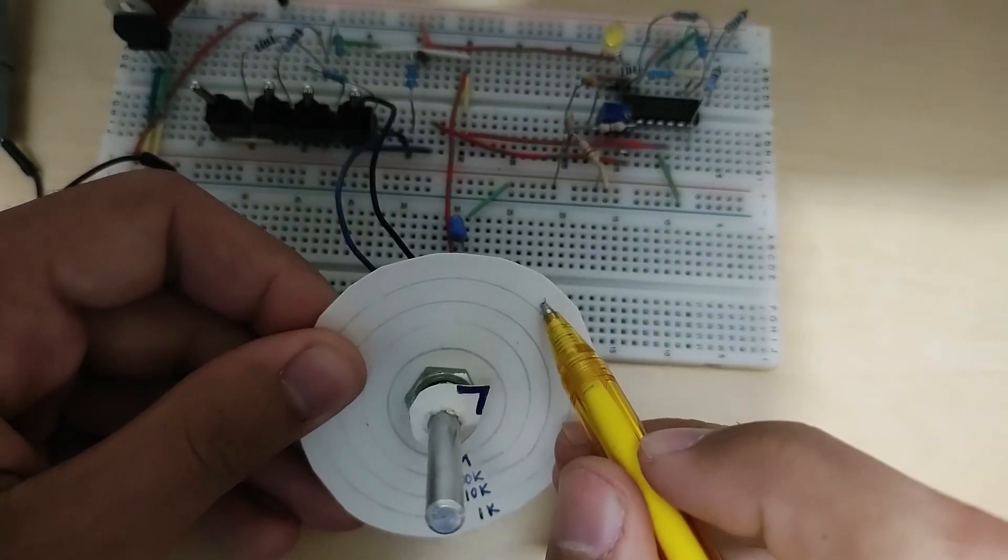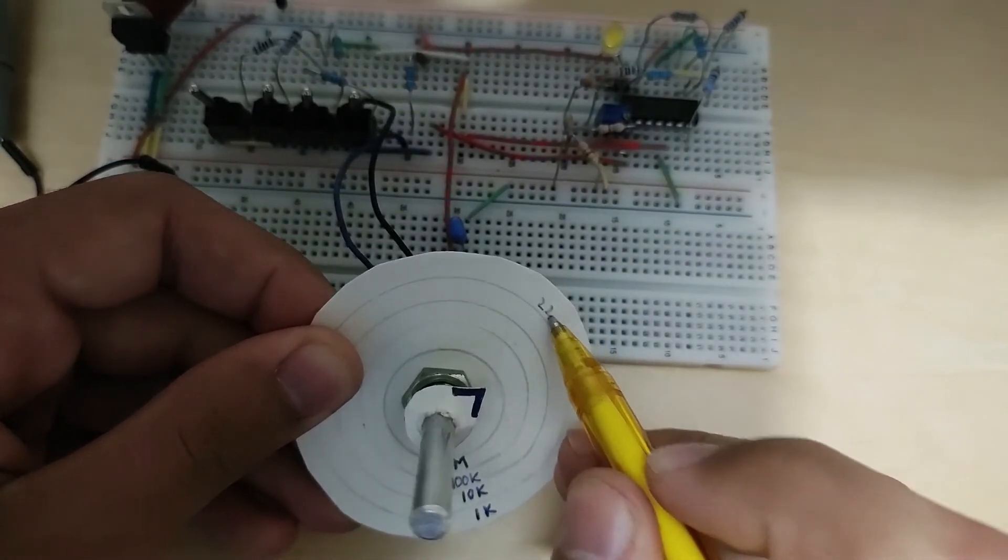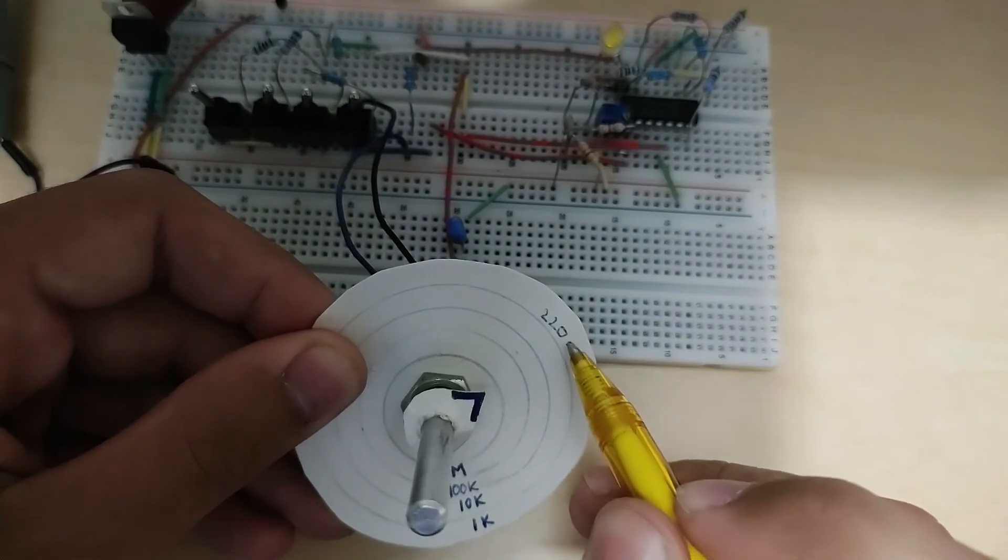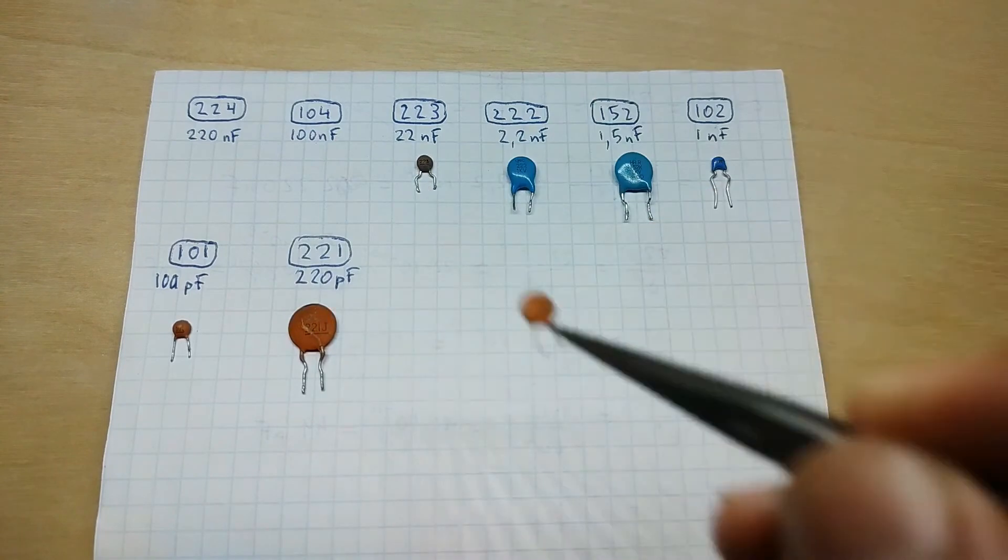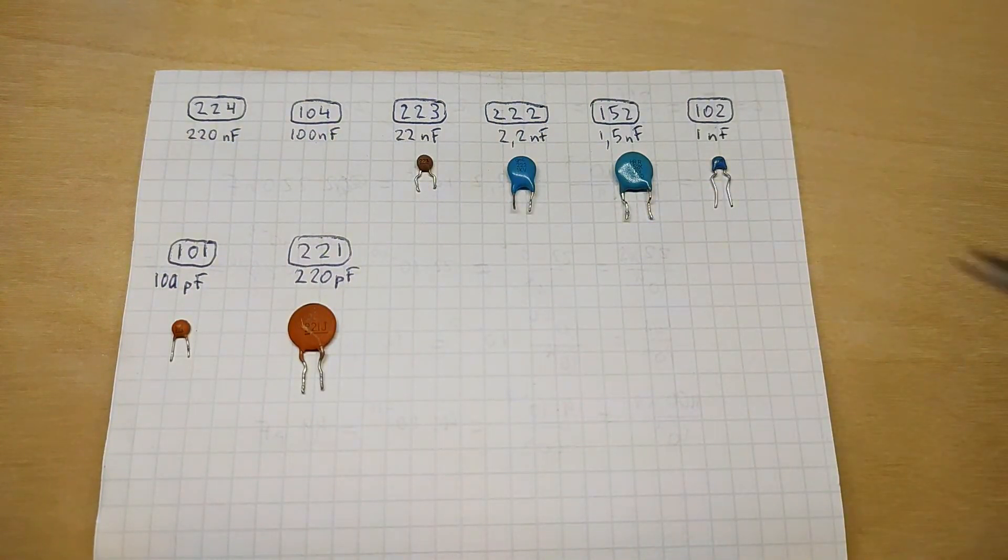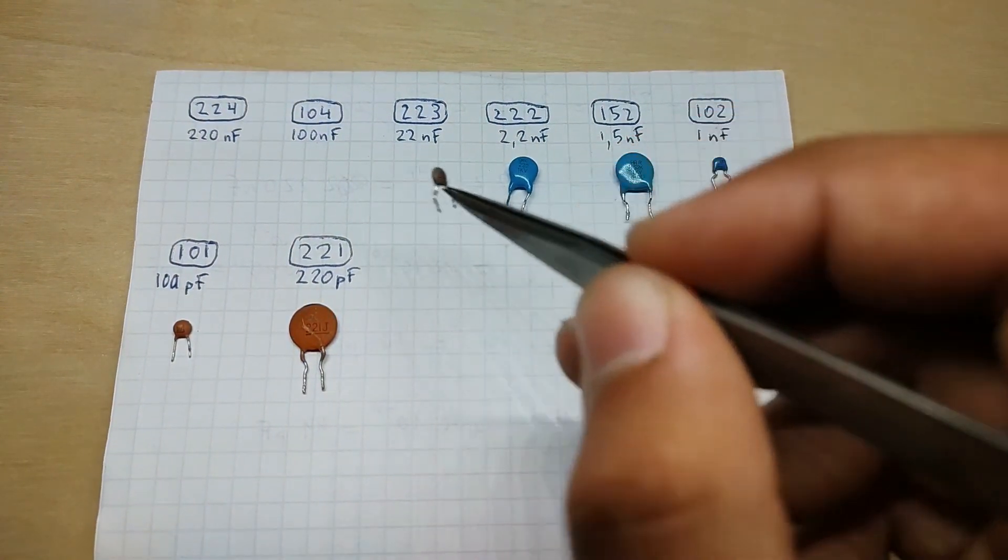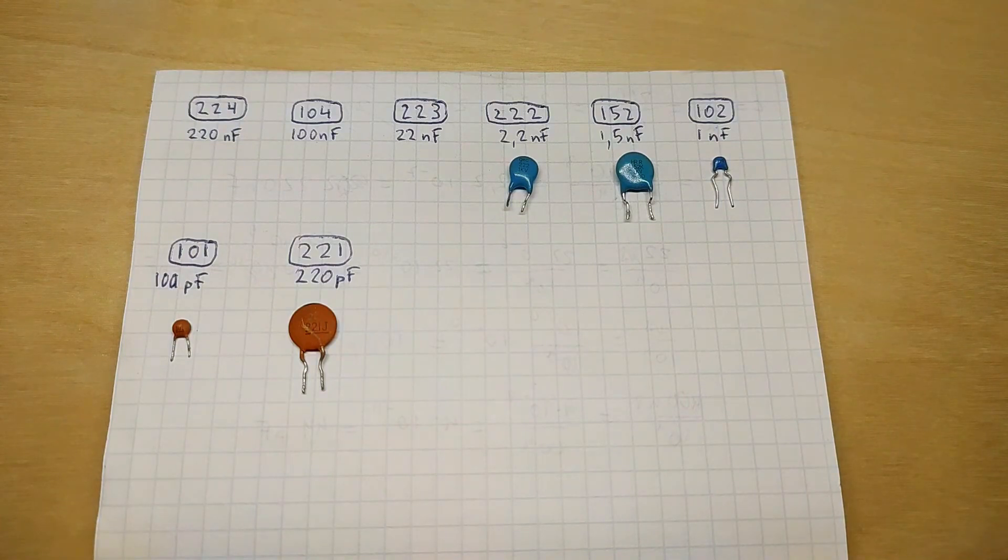Okay, so at this point the video is getting a bit long and repetitive if I do it for all the different capacitors, but the point is that you do it for all of them and then you fill in all the values, and at the end you should end up with something that looks kind of like this.